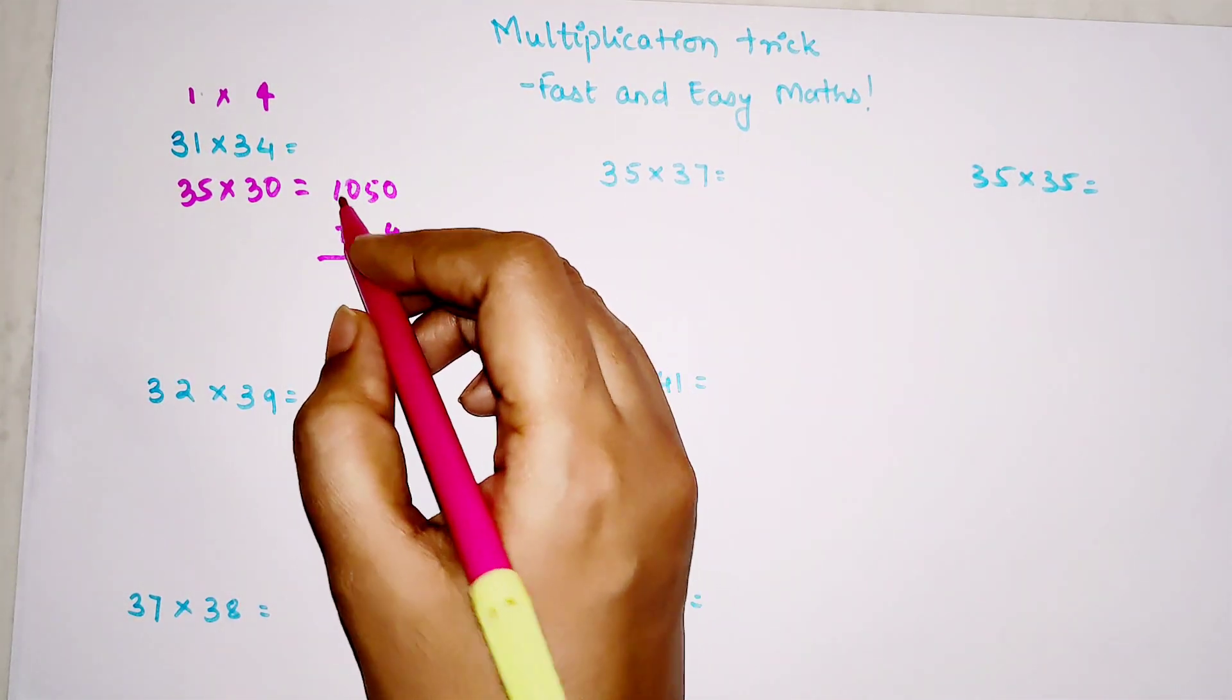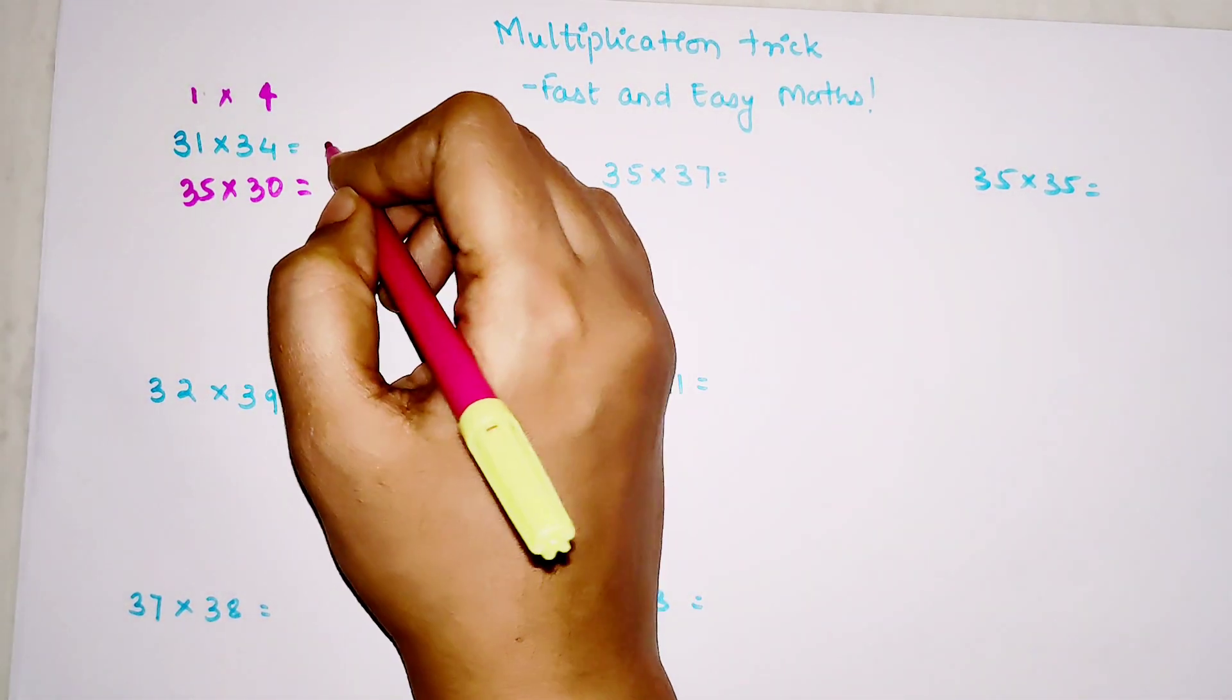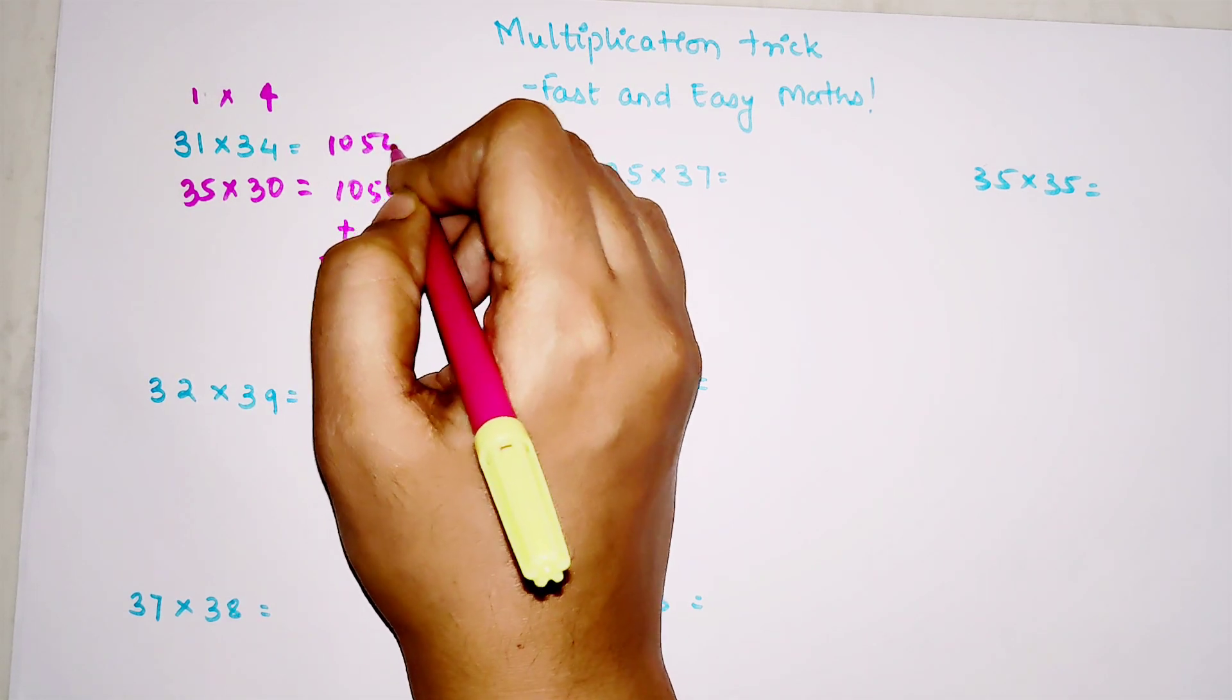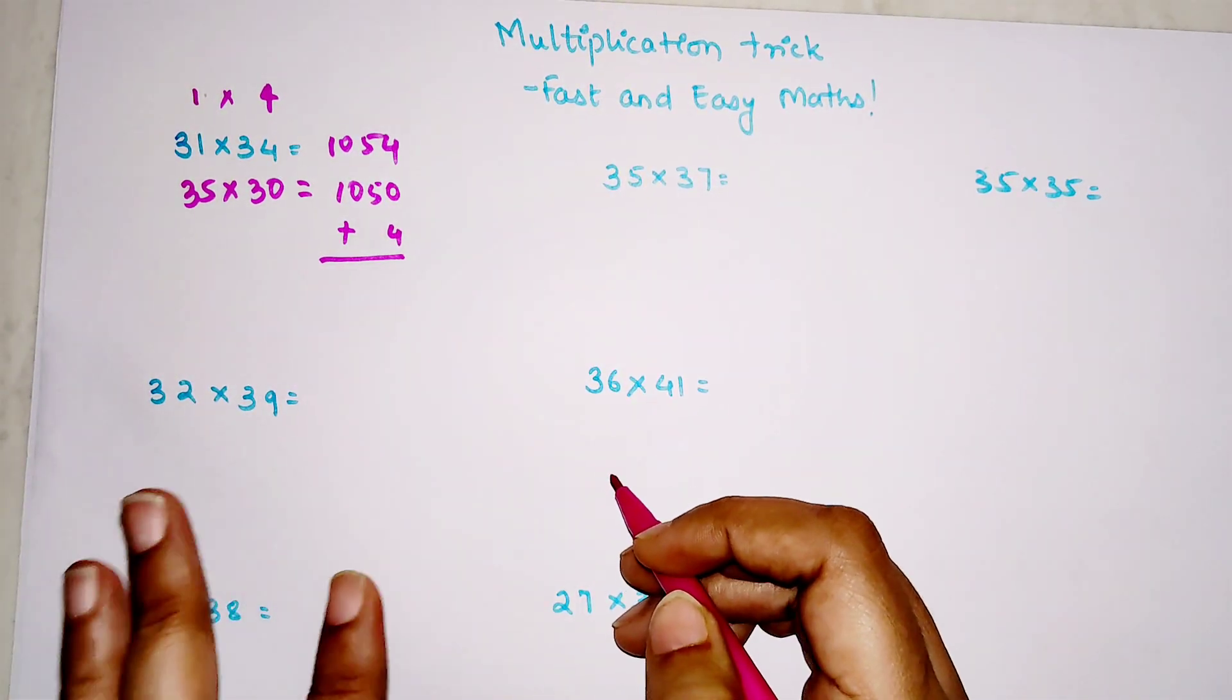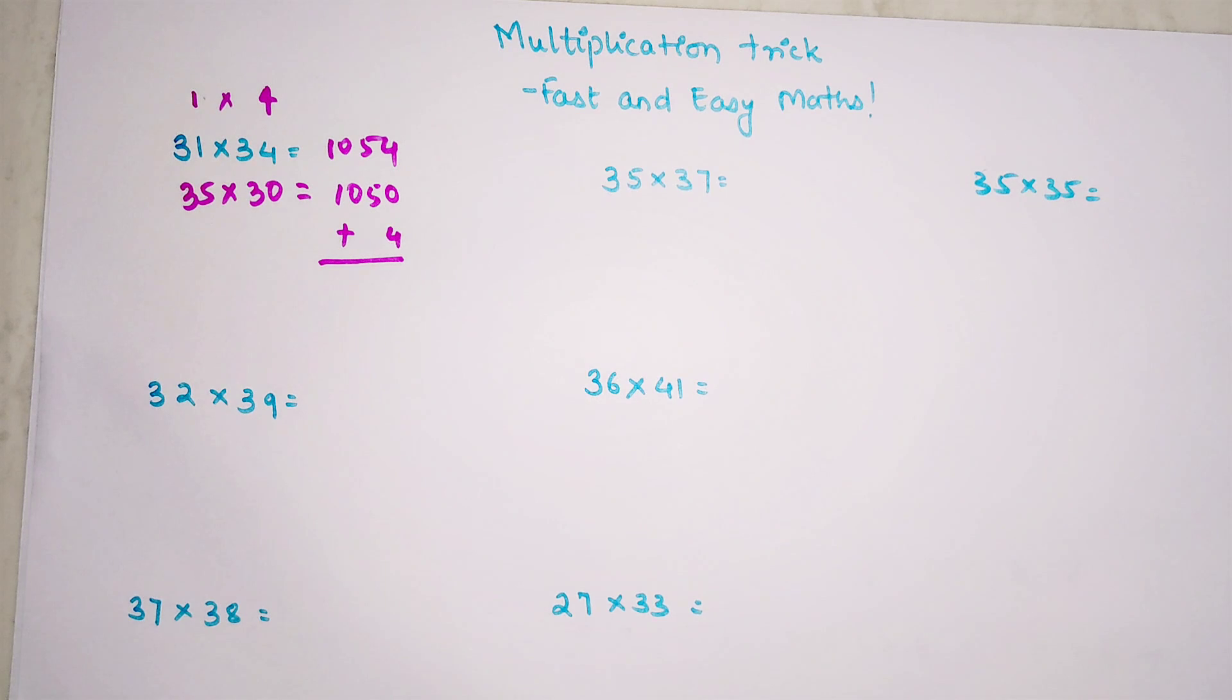If you have added the other way around, the answer will be the same. 1 plus 34 will also get you 35, and 31 plus 4 will also get you 35. If you like the way I am explaining, please go ahead and hit the like button. That gives me tremendous encouragement in doing these kinds of videos.